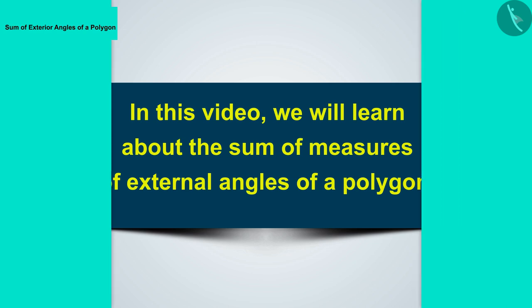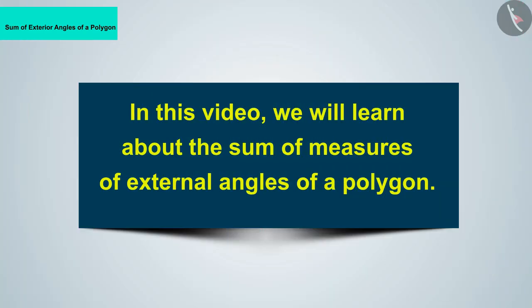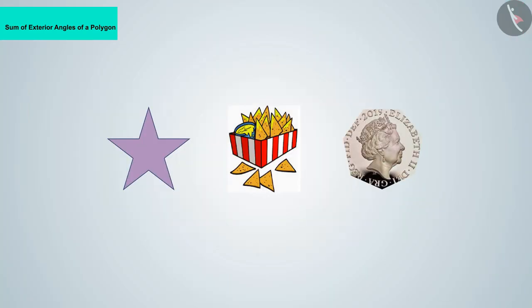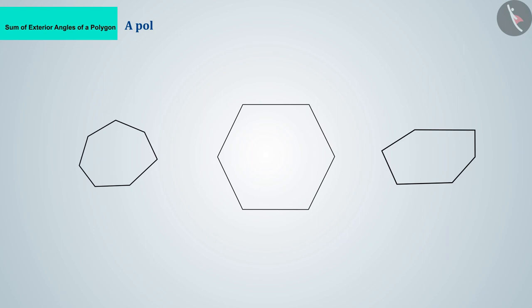Do you recognize them? Yes, these are all polygons. A polygon with n sides also has n internal angles and n external angles.